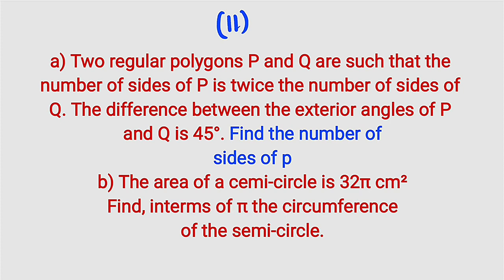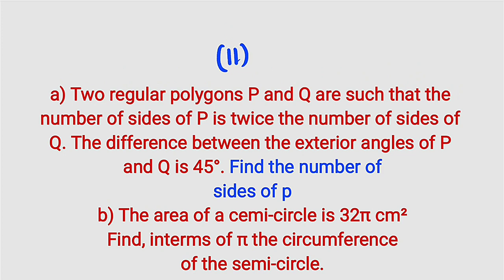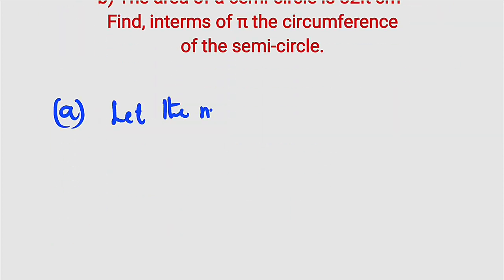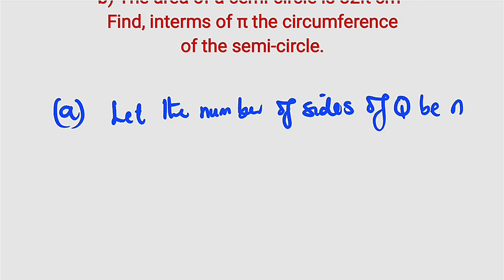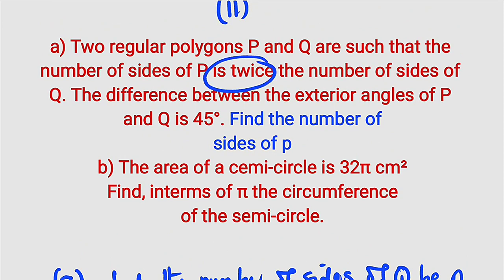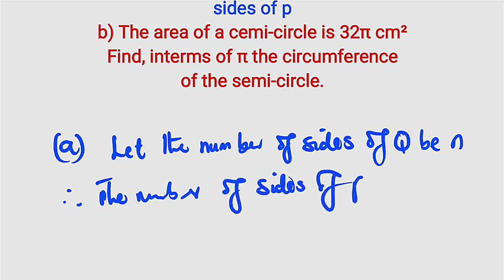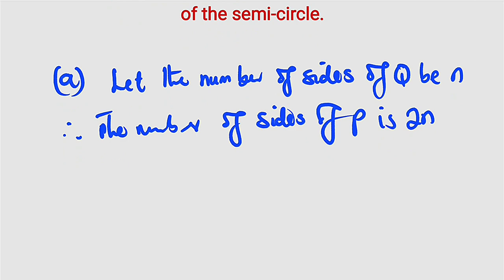Let's start with part a. If a polygon is regular, all its side lengths must be equal and all the interior angles must also be equal. Let the number of sides of Q be n. Therefore the number of sides of P will be 2n, because the question stated that P has twice the number of sides of Q. Having done this, we need to find the exterior angle of each of P and Q.